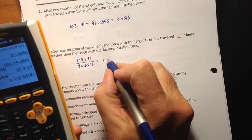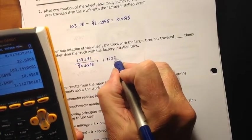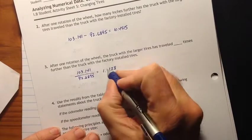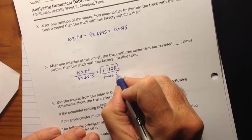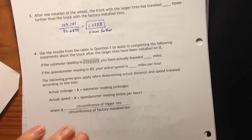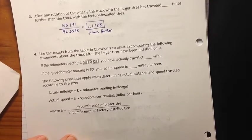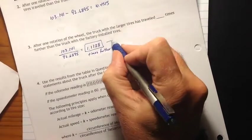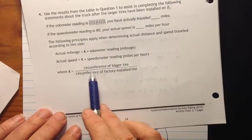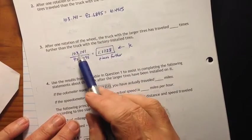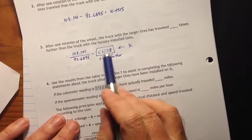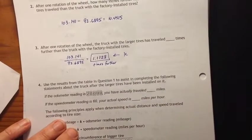So 103.141 divided by 92.6895. And I'm getting 1.112, and I'm going to round that up to 8. 1.1128 times more, times further with the new tires. Okay. So this value right here, we call this K. You can see this down below. K equals the circumference of the bigger tire over the circumference of the factory installed tire. And so that's what I did right here. I took my circumference, divided by circumference, and got this value. That is K.